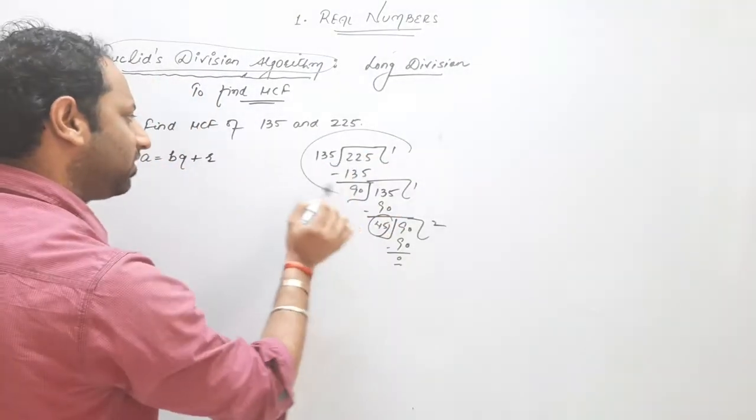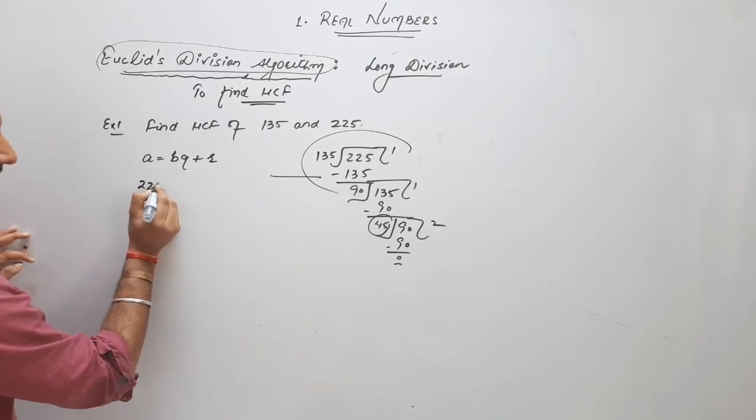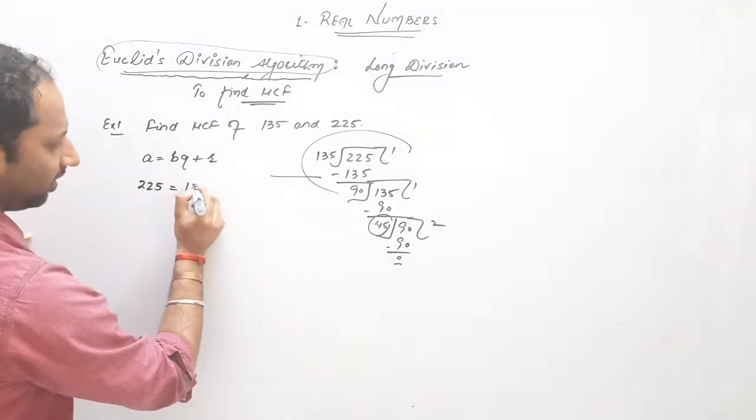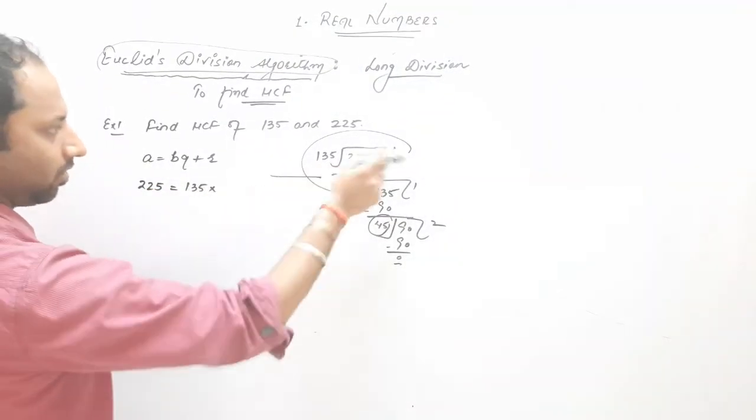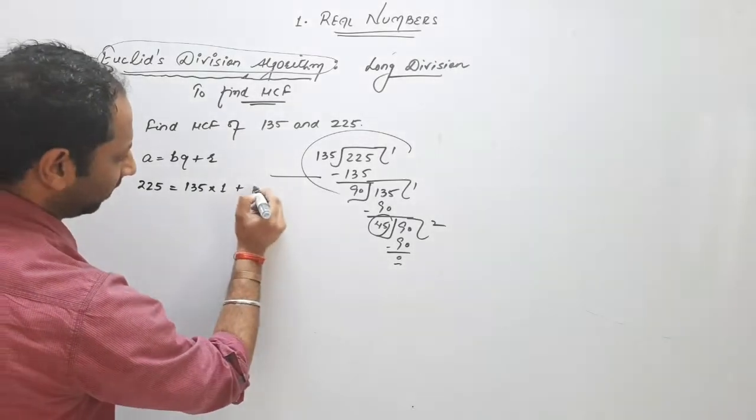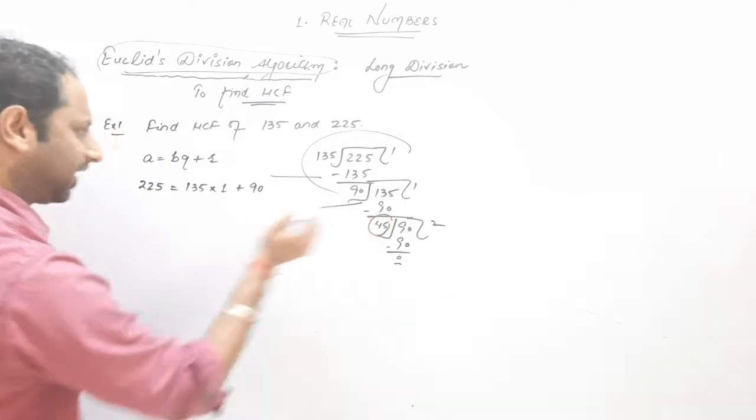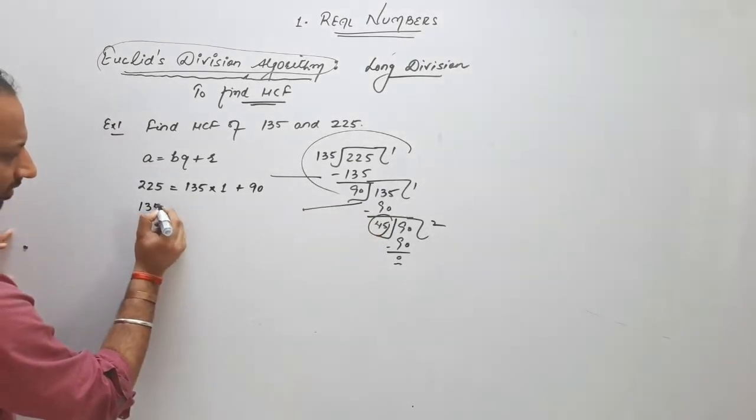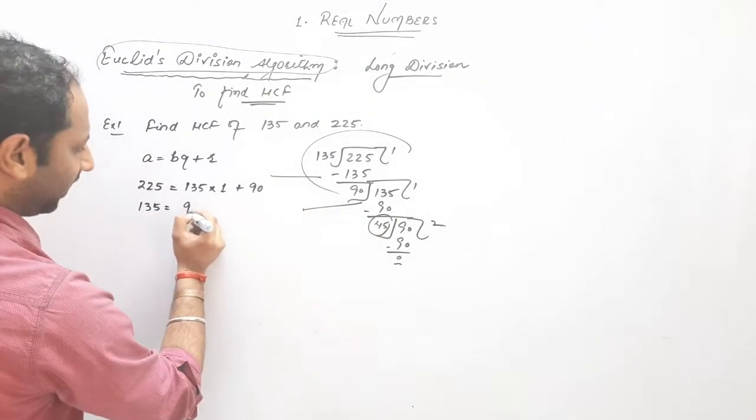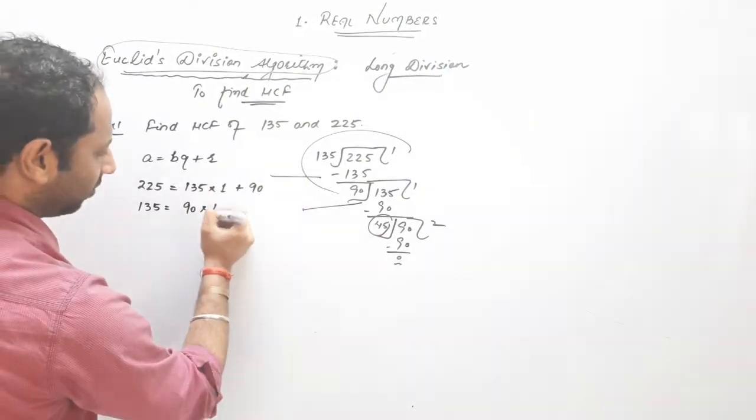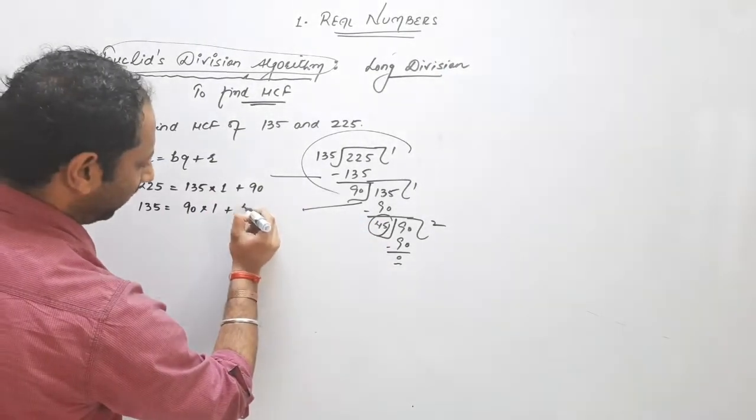In very first step, dividend 225, divisor 135, quotient 1, remainder 90. Am I right? In second, dividend 135, divisor 90, quotient 1, remainder 45.